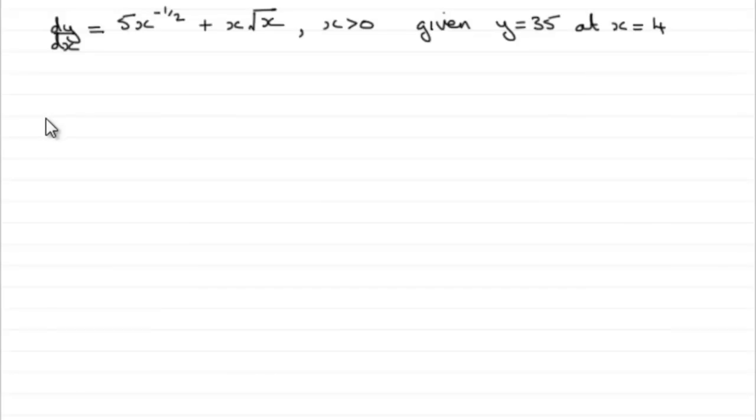With this question, we're given dy/dx equals 5x to the minus half plus x root x, where x is greater than zero, and we're asked to find out what y is, given that y equals 35 at x equals 4.